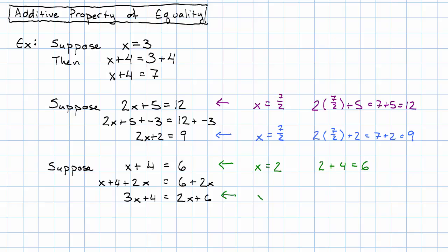If we plug in X equals two in that final equation, well, we'll have three times two plus four. That's six plus four. That's 10. Plug in the same thing on the right. Two times two plus six. That's four plus six, which is also 10. So that really does work out.